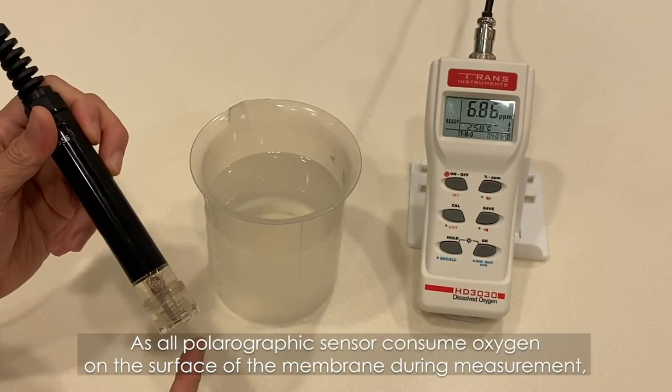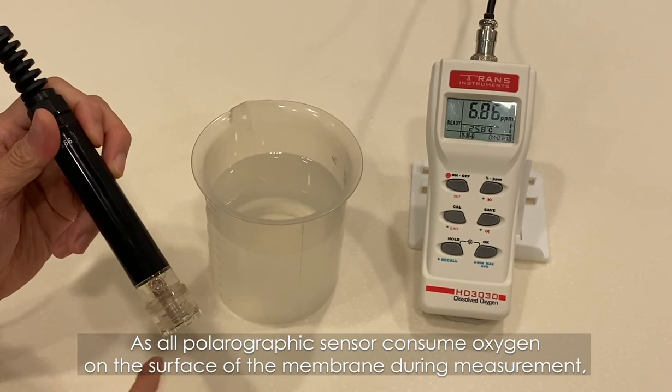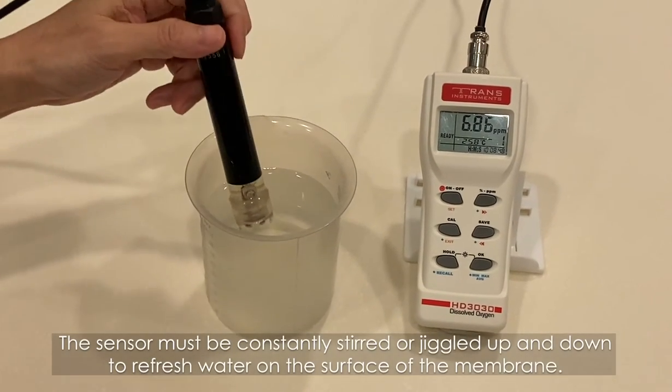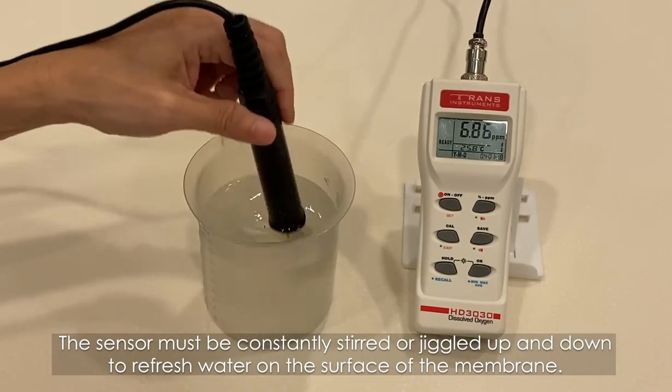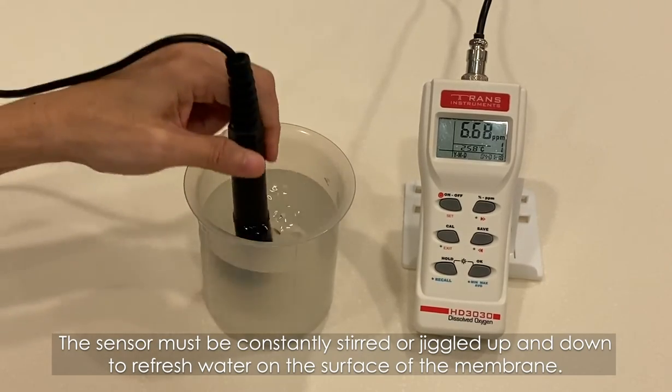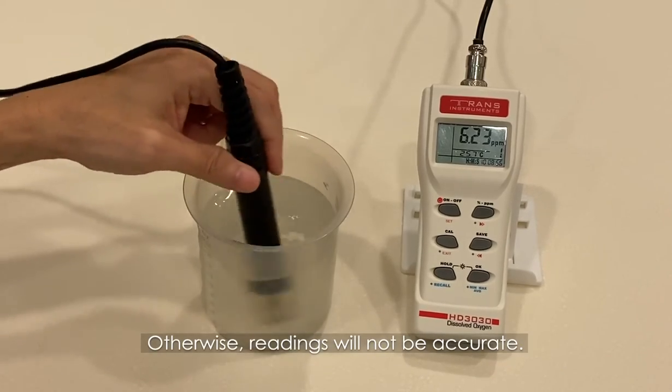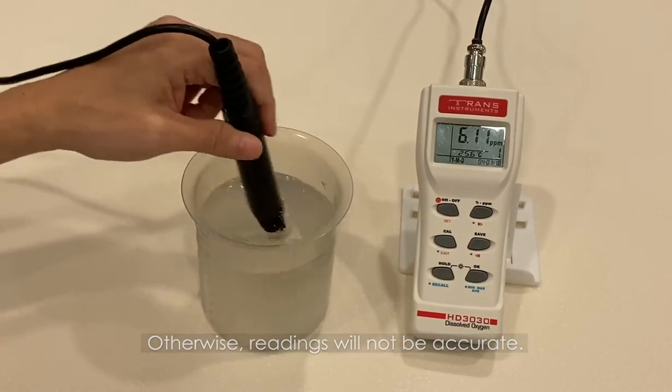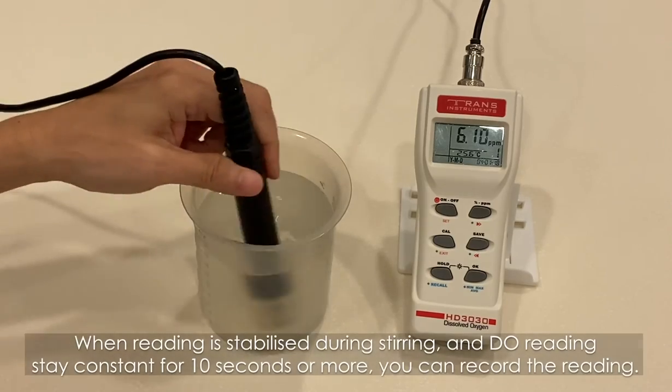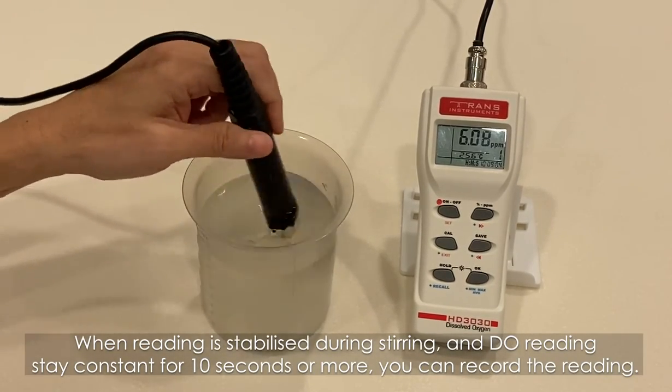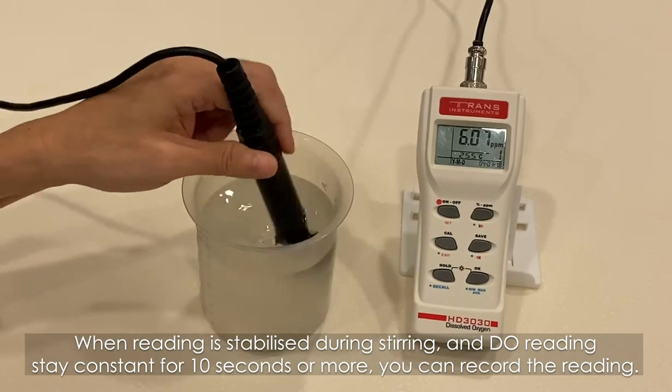As all polarographic sensors consume oxygen on the surface of the membrane during measurement, the sensor must be constantly stirred or jiggled up and down to refresh water on the surface of the membrane. Otherwise, reading will not be accurate. When reading is stabilized during stirring and DO reading stays constant for 10 seconds or more, you can record the reading.